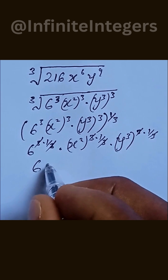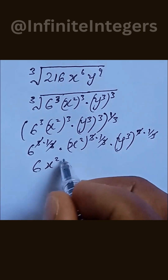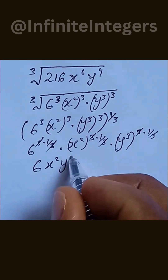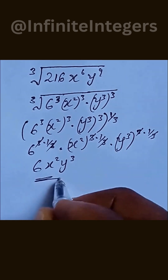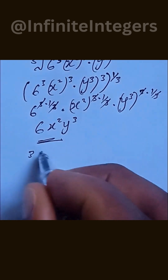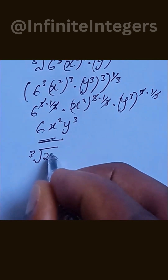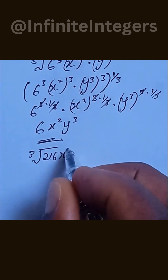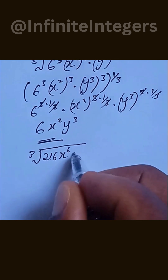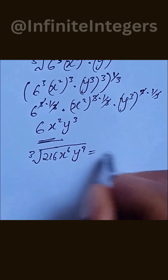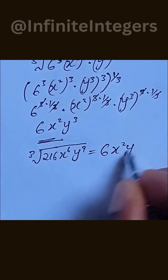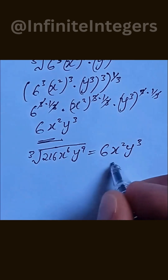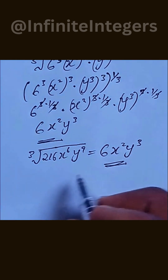We are left with 6 times x to the power of 2, then y to the power of 3. That will be the final expression, which simply means that the cube root of 216 x to the power of 6 y to the power of 9 is equal to 6x squared y cubed, and that's the final answer.